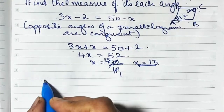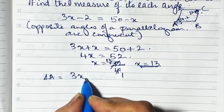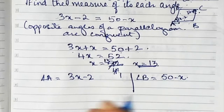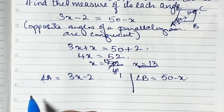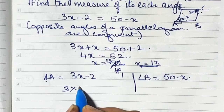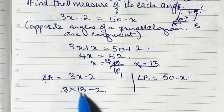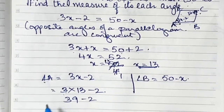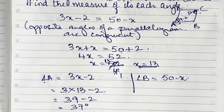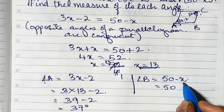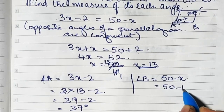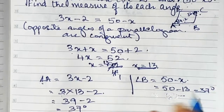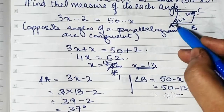Now substitute x equals 13. Angle A is 3x minus 2, so 3 times 13 minus 2 equals 39 minus 2 equals 37 degrees. Angle C is 50 minus x, so 50 minus 13 equals 37 degrees. Angles A and C are congruent, as expected.